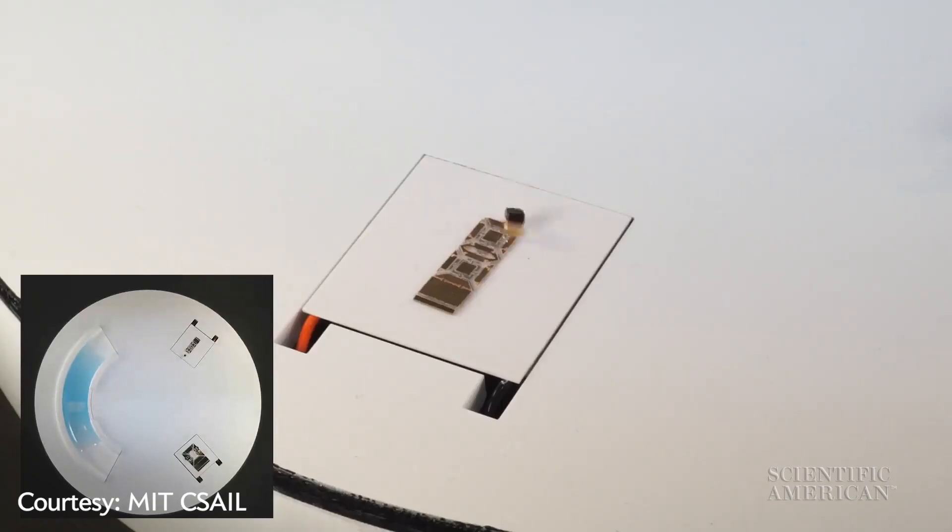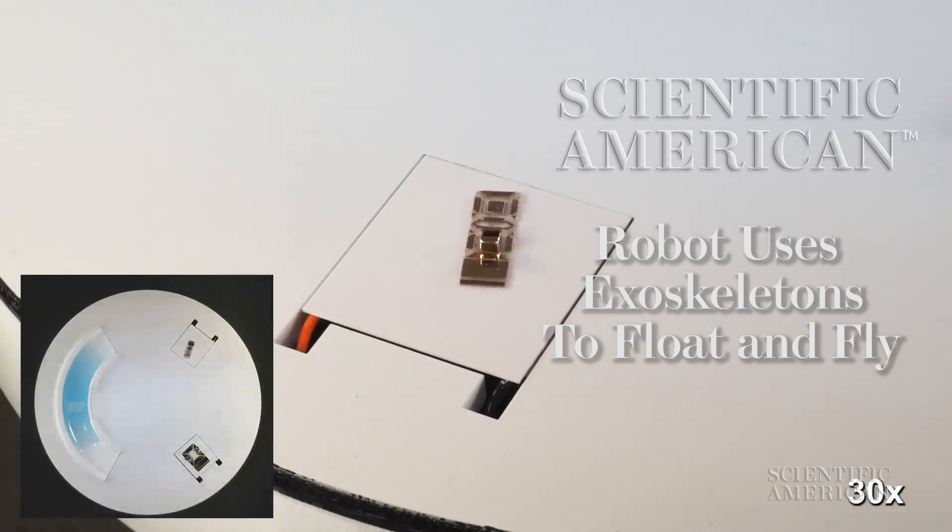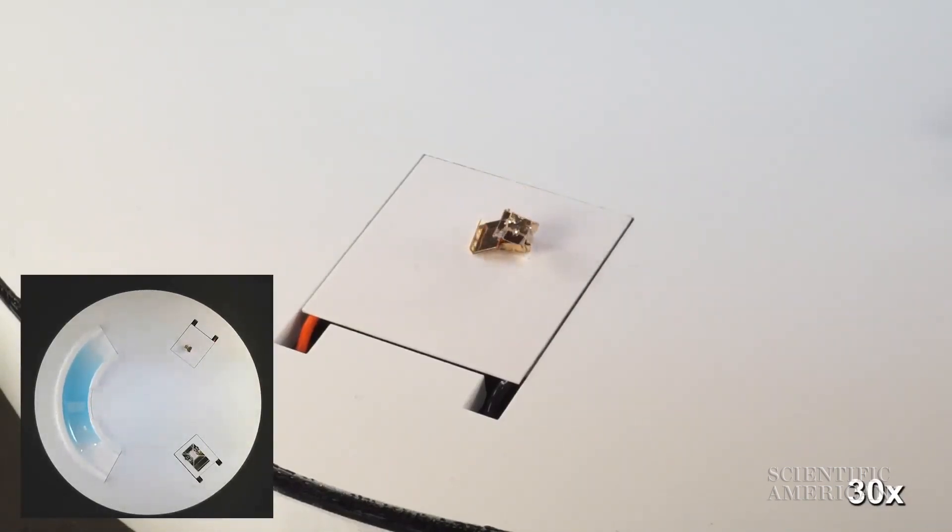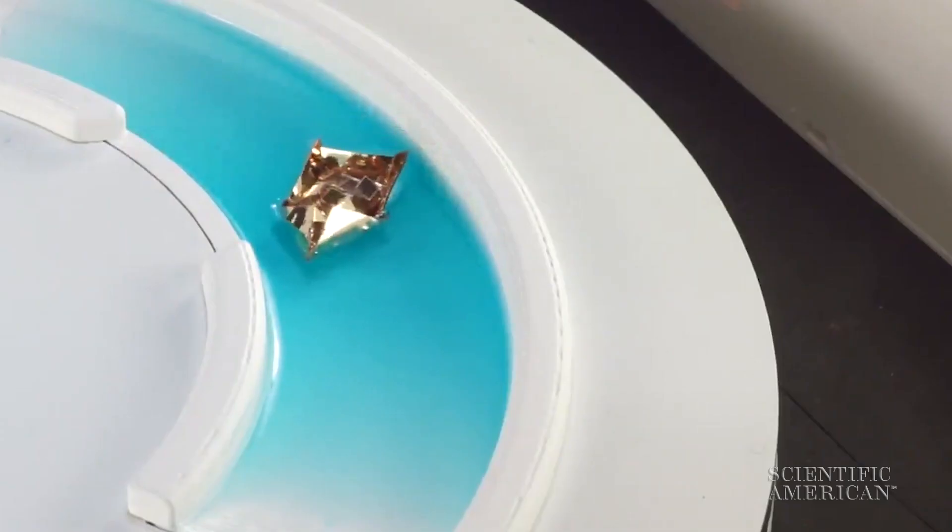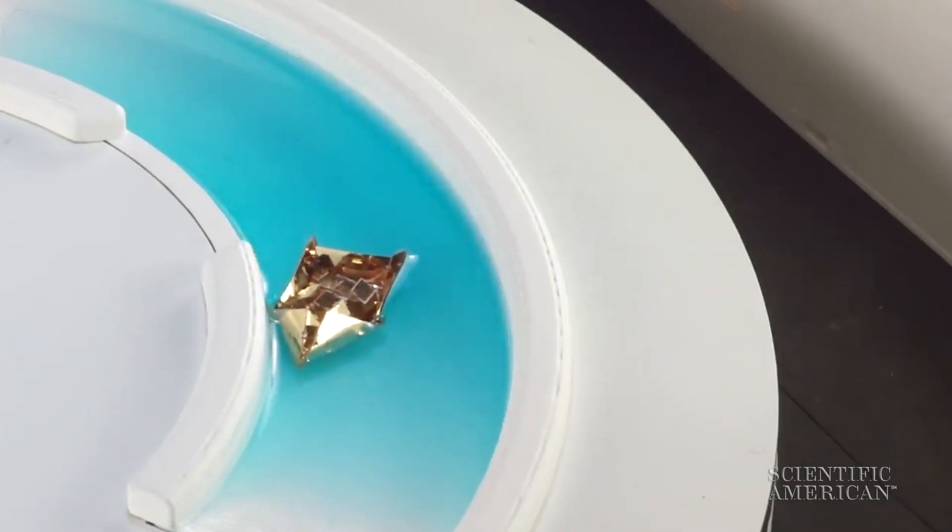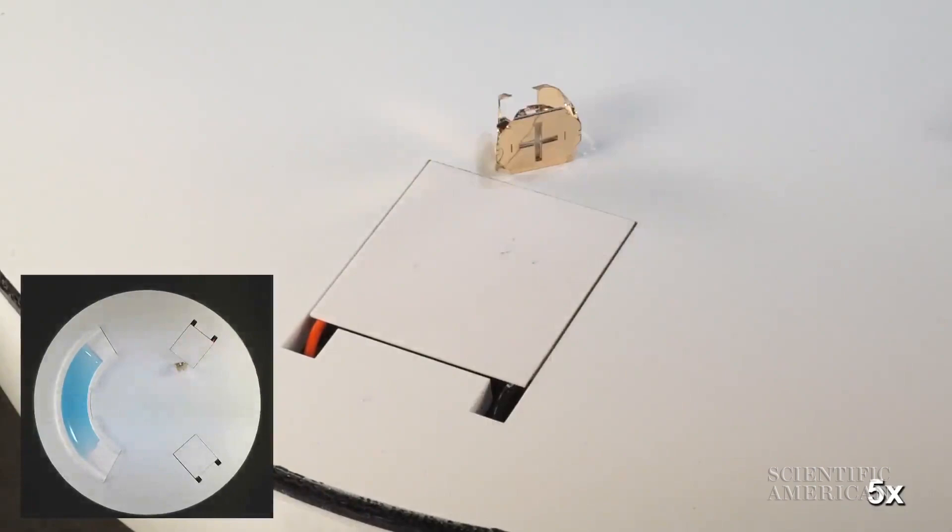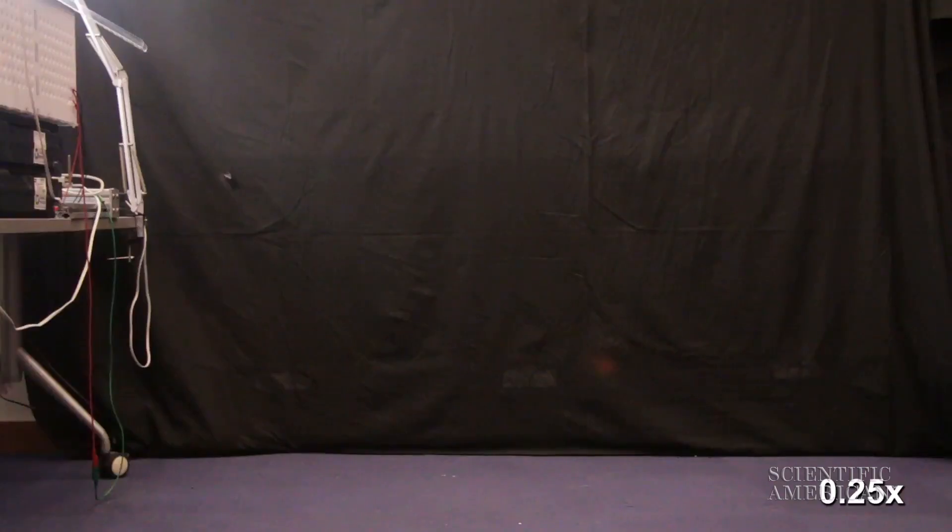Meet Primer, the shape-shifting robot. It equips itself with self-assembling exoskeletons that let Primer float, roll around, and even glide.